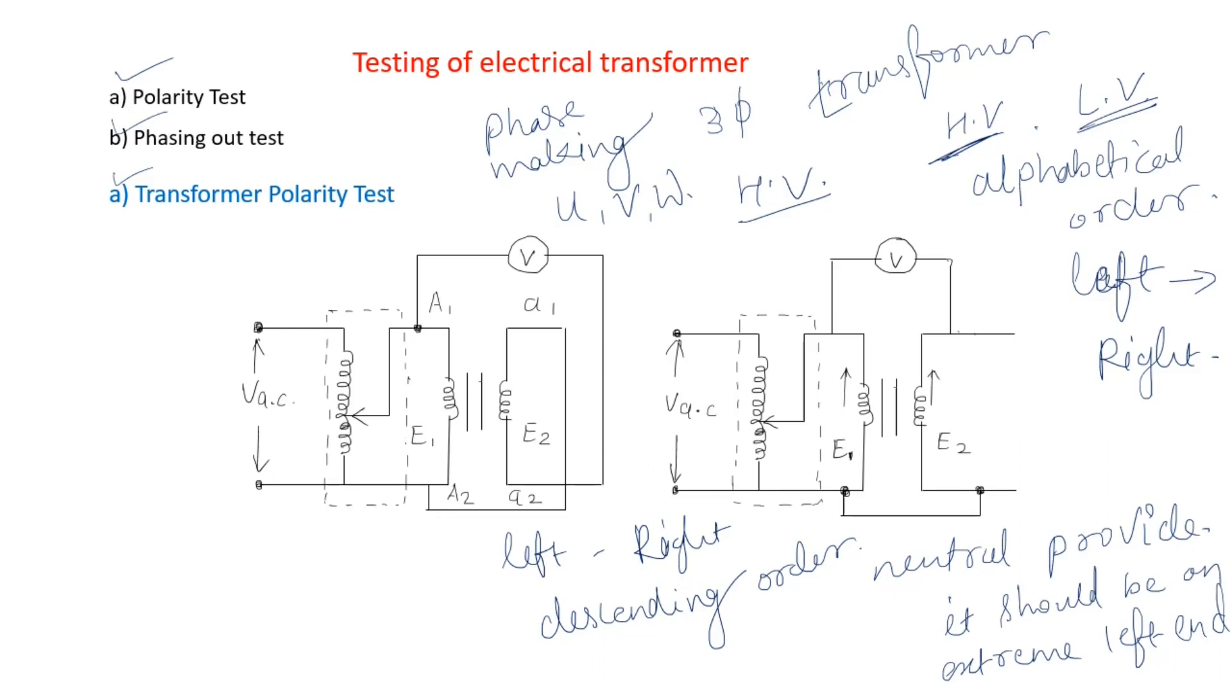The identical suffixes on HV and LV side represent identical polarity. If identical suffixes are on LV or HV side, this means they represent identical polarity. That is, at any instant in a cycle if E1 is positive then e1 must also be positive, and at the same instant A2 and a2 both must be negative.